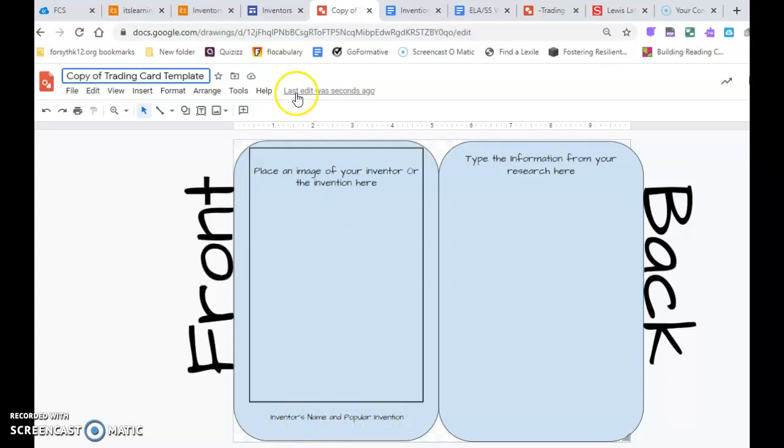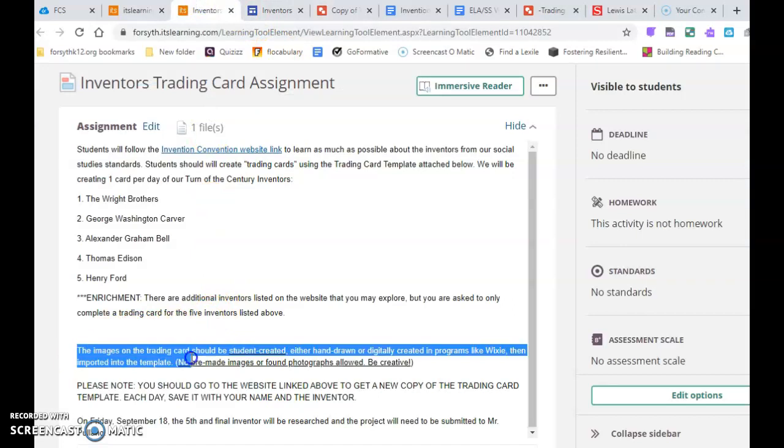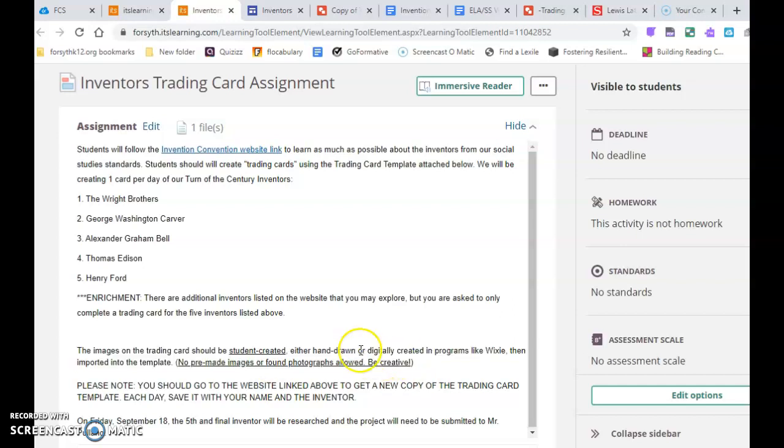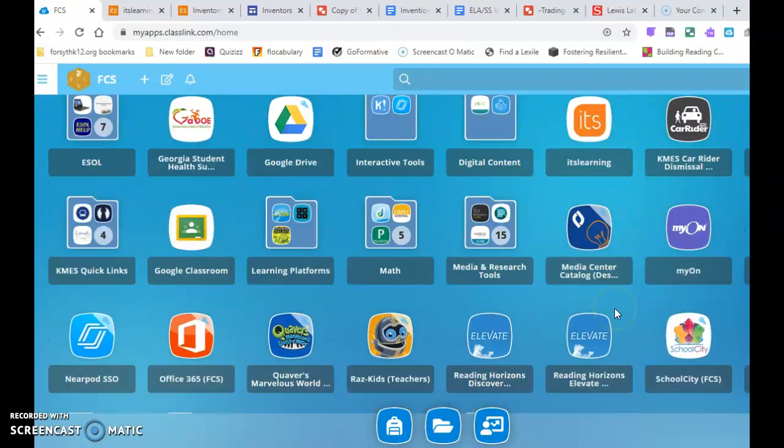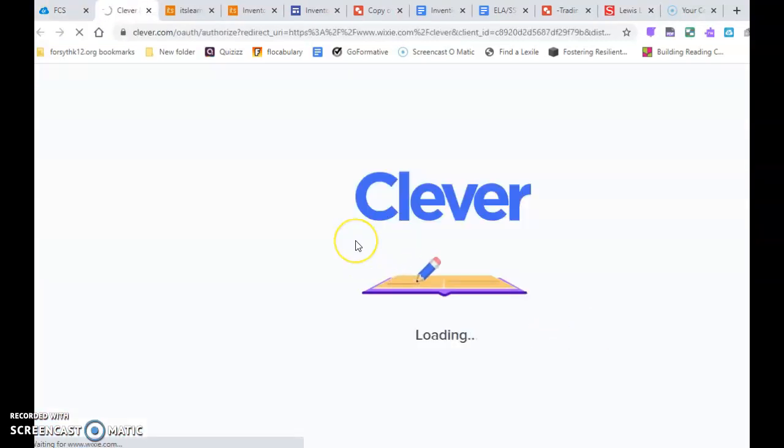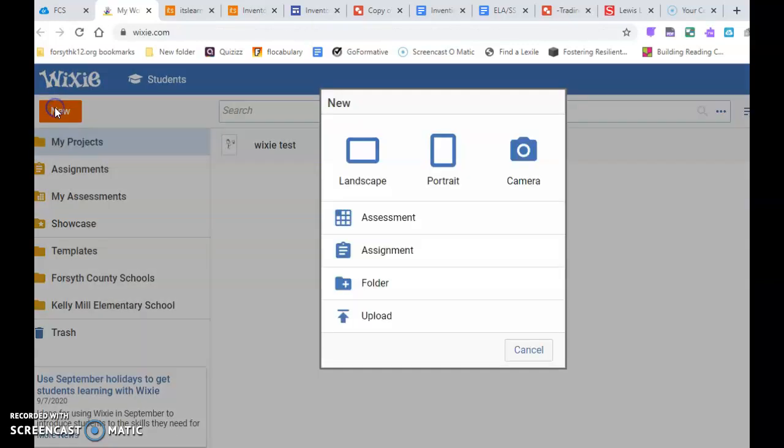It doesn't have to be super long, but it does need to be complete, full, well-written sentences. You are getting a grade here. And then you'll have the inventor and their invention down here. And so one thing that I want to show you is that the images here on the trading card should be student created. You are not just pulling an image or a picture from the internet. You are either going to hand draw or digitally create using different programs. For instance, you guys have, and I have not used it a whole lot, but you guys have Wixie, for instance.